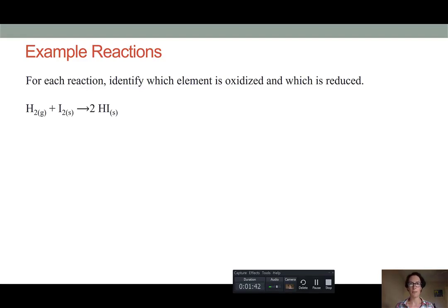In hydroiodic acid, we have hydrogen as a 1+ cation and iodide as our 1- anion. This means that the hydrogen is going from an oxidation state of 0 to +1.